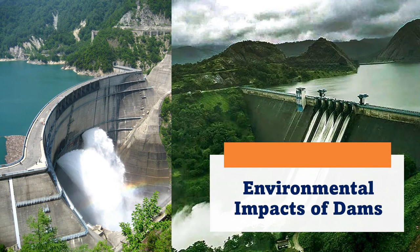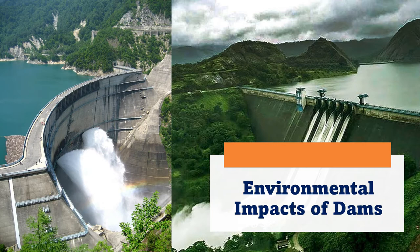Welcome learners. Today we are going to discuss the environmental impacts of dams. As we know, dams have been built on rivers as early as 1500 AD. They are mainly constructed to control floods, store large amounts of water, supply water for irrigation and domestic use, and check soil erosion. Later, dams were used to run water wheels and more recently to generate hydroelectric power.